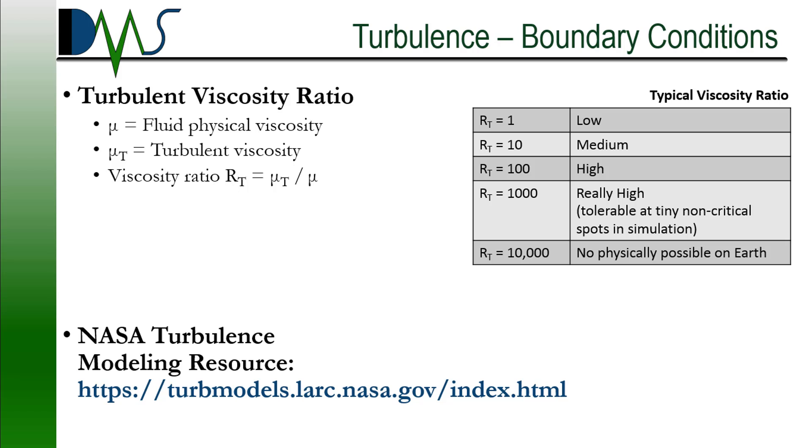So a ratio of one, that's pretty low. That's very low turbulence. A ratio of 10, that's fairly medium. Average medium turbulence, that's sort of my default value. A ratio of 100, that's pretty darn high. You're getting pretty turbulent flow there.